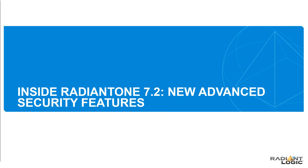Thank you very much, Emily, and welcome everyone. Today we'll be talking about Inside Radiant One 7.2 — an exposé on advanced security features within our product set. I want to take a few minutes to set the stage before we get into some details of the product, but we are going to look very deeply into the solution and give you some insights into how we've incorporated advanced security features that allow you to provide a richer and more secure environment for your identities and your organization.